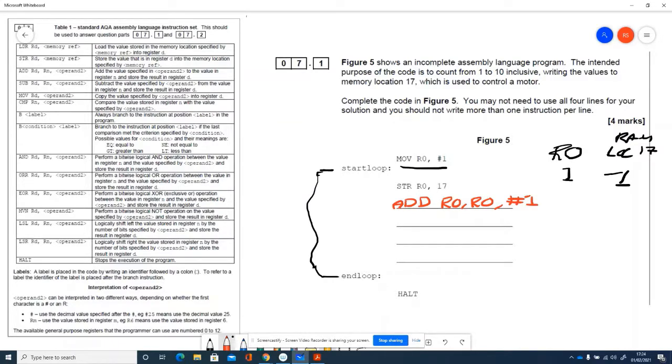So if we look at add we've got rd rn so two registers add the value specified in the operand to the value in the register n that's this one and store it in this register. So we're taking the value that's in r0 which currently is one and we're adding one to it and so register r0 becomes two.